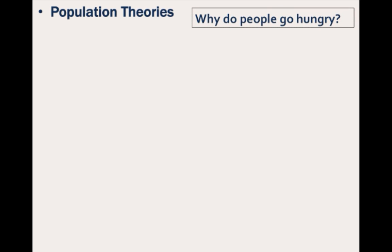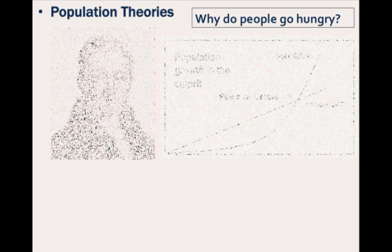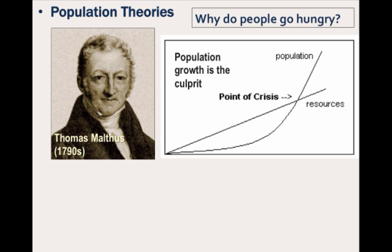We will look at some population theories that have also led to certain population policies. One of the overarching questions is: why do people go hungry? One of the most famous theories was proposed by Thomas Malthus back in the 1790s. He contended that food increased arithmetically or linearly. However, human reproduction increased geometrically or exponentially. So according to Malthus, population growth was the culprit as to why people went hungry, and despite natural checks on the population such as famines and epidemics, overpopulation would persist.